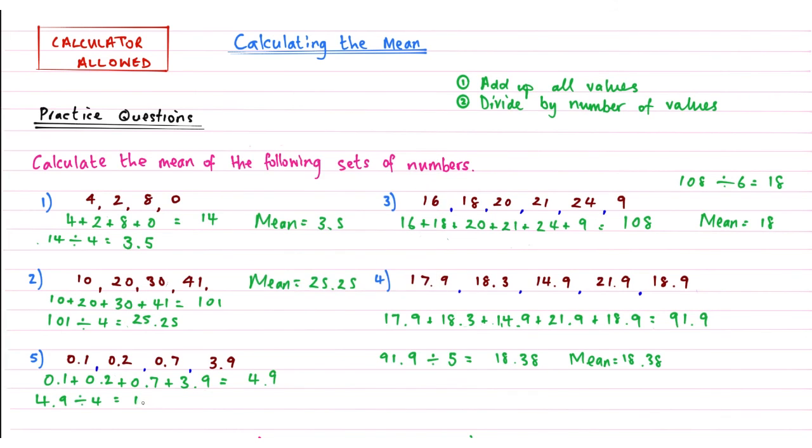So 4.9 divided by 4, and that gives me an answer of 1.225. Just double check that, yeah. So my mean for question 5 is going to be 1.225. And underline it, so it's easier for whoever's marking our work can find our answers quickly.